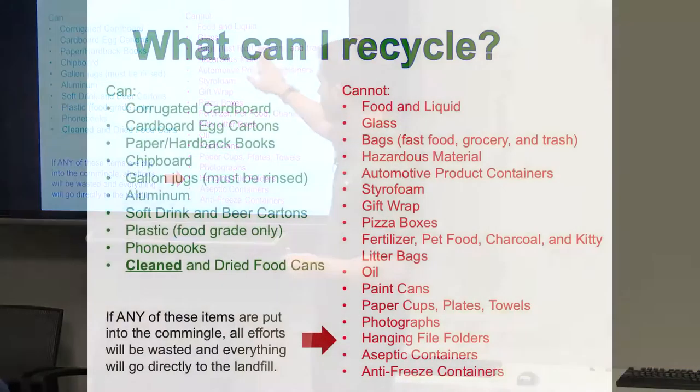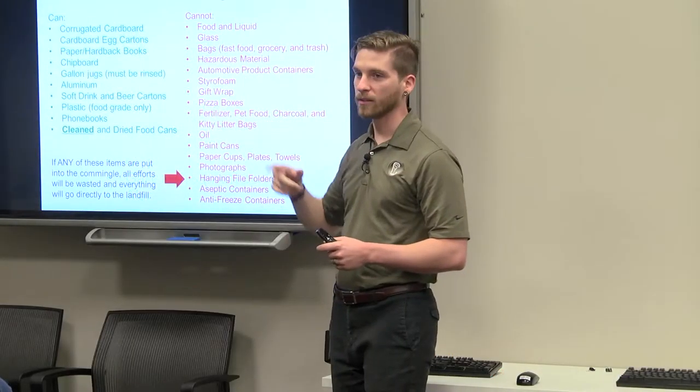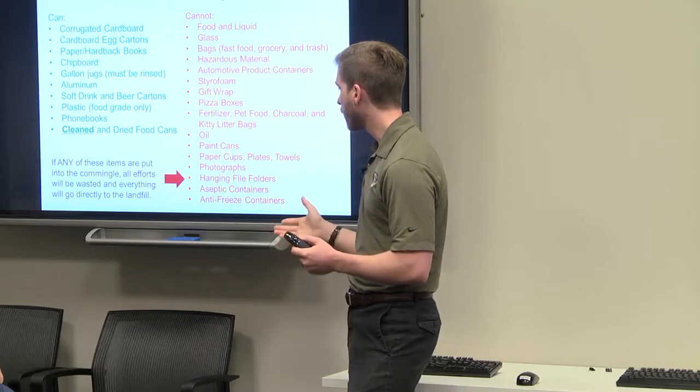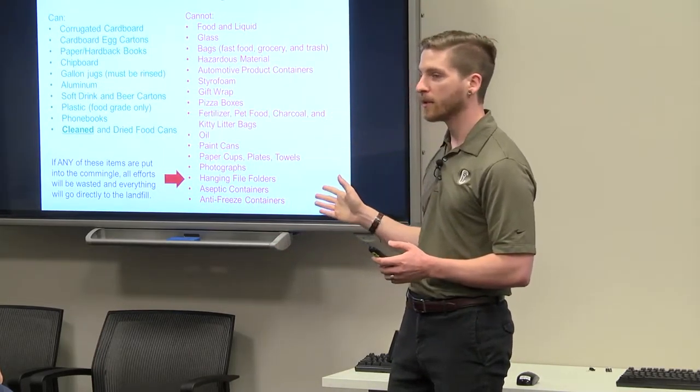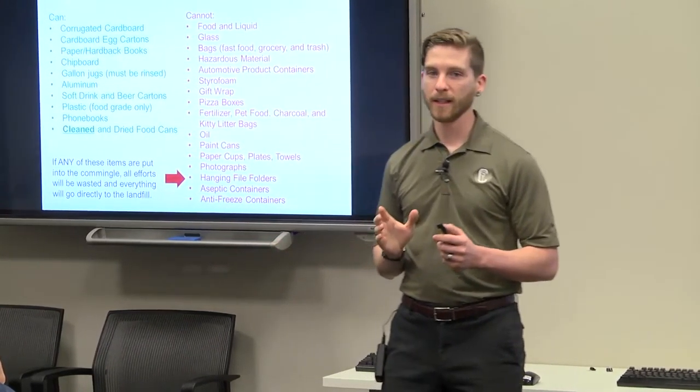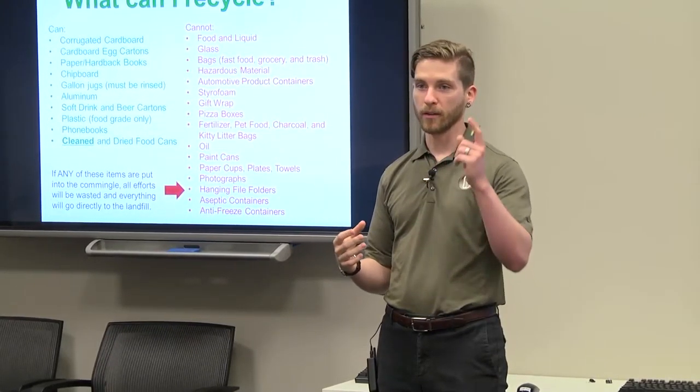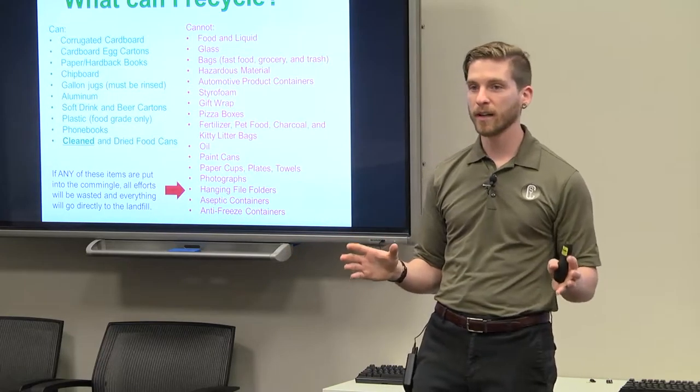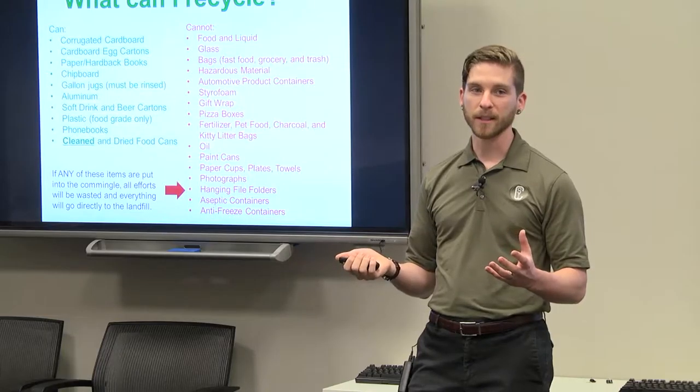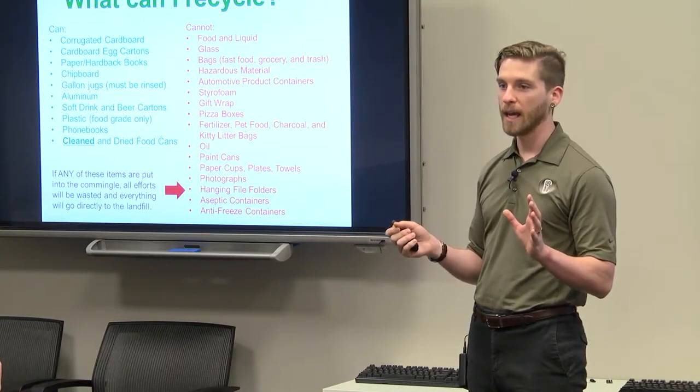These are all the things that can't be recycled. Styrofoam, gift wrap, obviously you don't want to recycle hazardous material. Any type of bags, your fast food bags, Walmart bags, trash bags, obviously that can't be recycled. Any type of oil, paint cans, photographs. But one of the really important things to remember is that if you do have a gallon jug or canned beans and you want to recycle those cans, just always, always, always rinse them out. Get rid of any type of food particles or oils because if that goes in the commingle, then the whole load goes to the landfill.